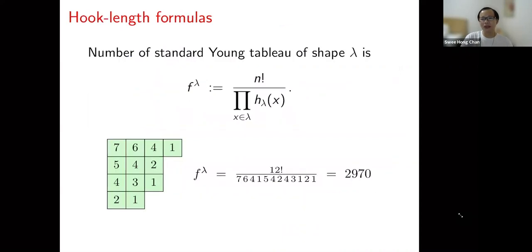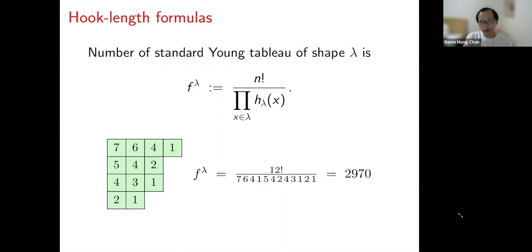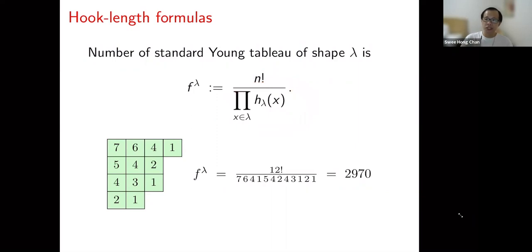Before the Naruse formula, let us review the classical hook-length formula, which counts the number of standard Young tableaux (i.e., the number of linear extensions). For each cell, you compute the hook-length: the number of boxes directly below, directly to the right, and the cell itself. For example, the top-left box of a certain diagram has hook-length seven (three below, three to the right, plus itself). Then the number of linear extensions equals n! divided by the product of all hook-lengths — in this example, 2970.